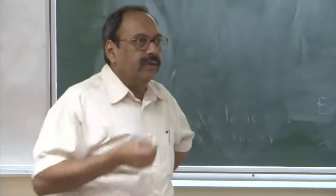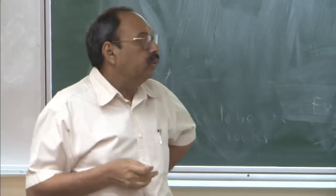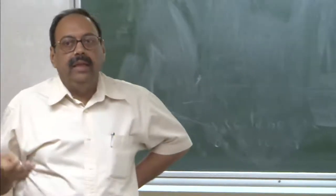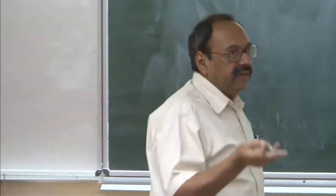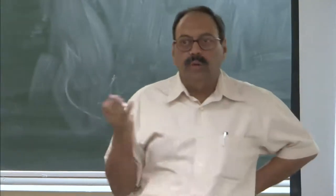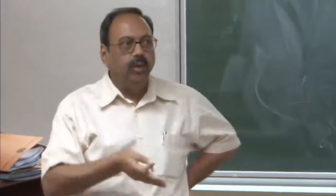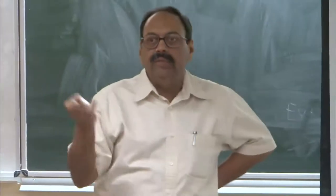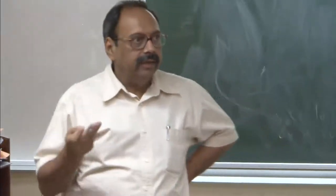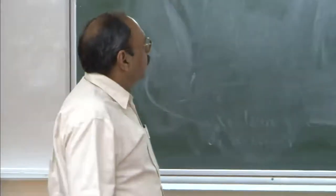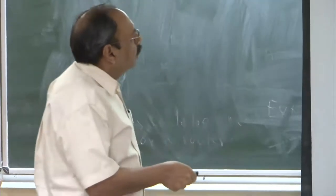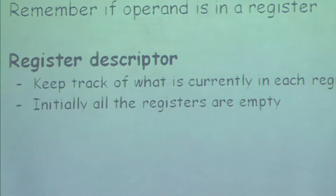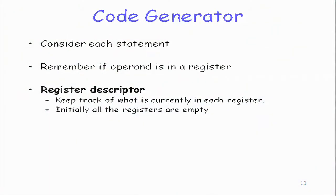The reason a register may contain two variables is that if we say d is assigned a, and a is already loaded in a register, we do not have to change anything in the description. The register descriptor keeps track of what is currently in each register. Initially, before the basic block, every register is assumed empty, and we start using registers as we enter the basic block.